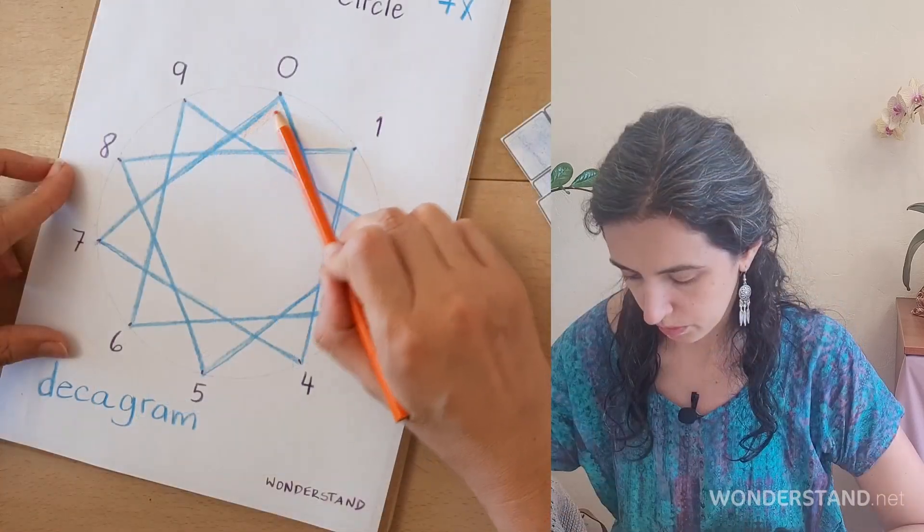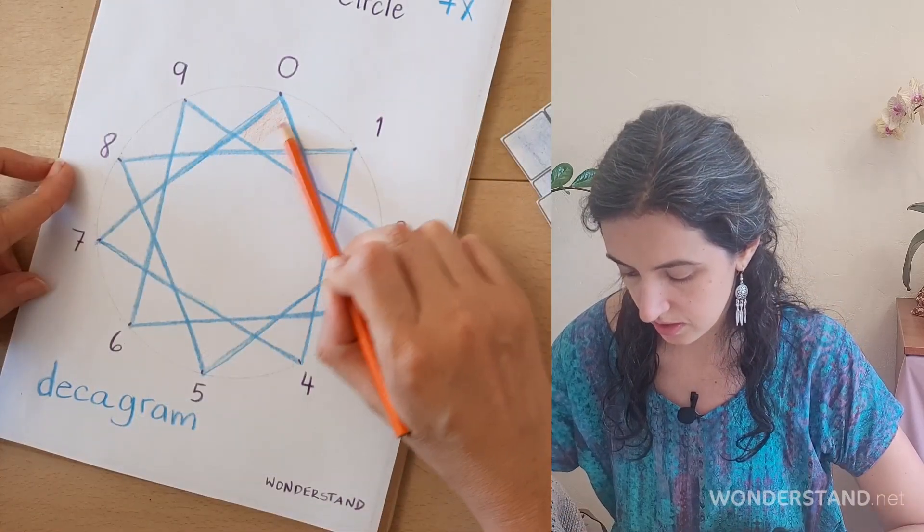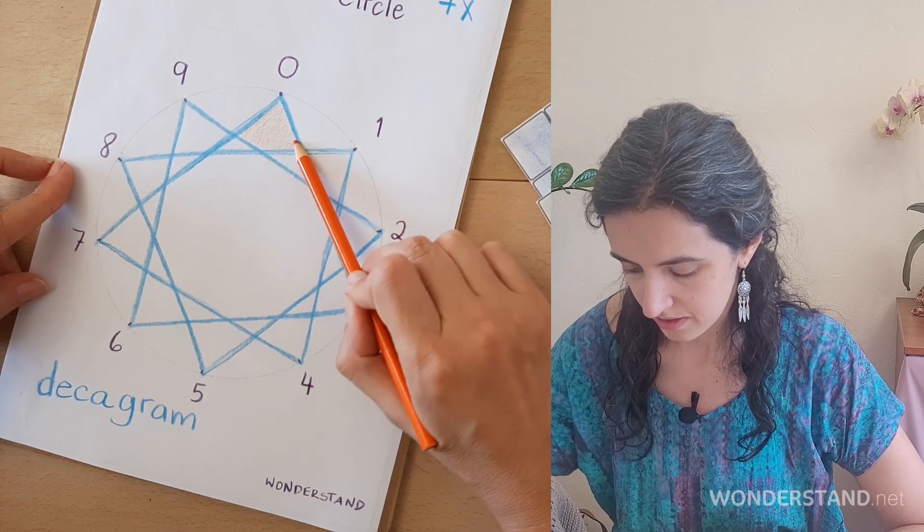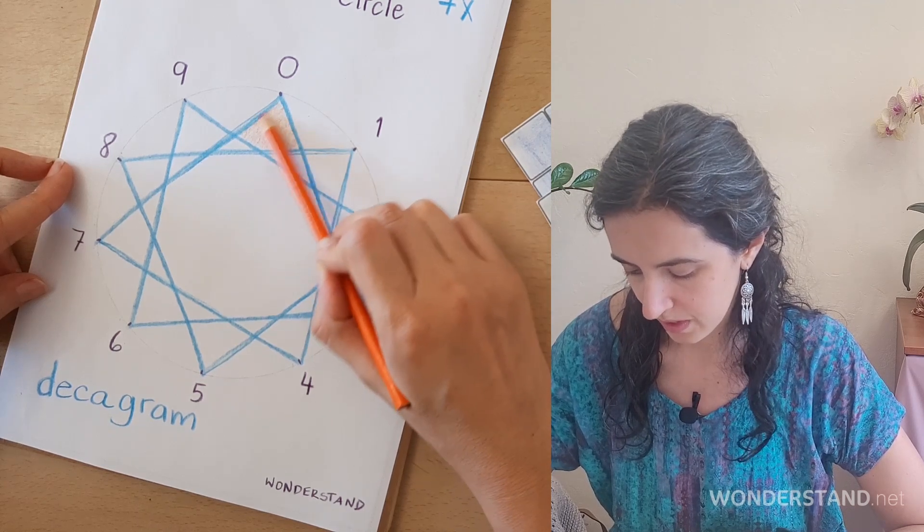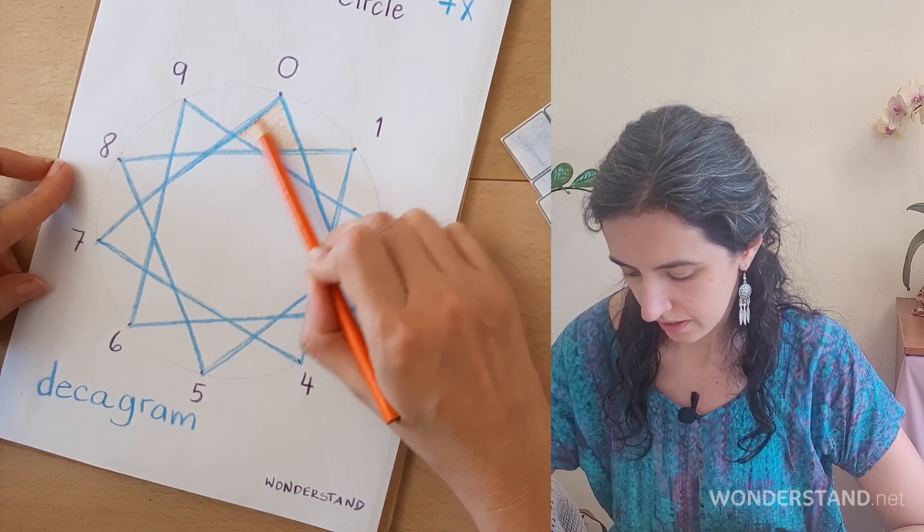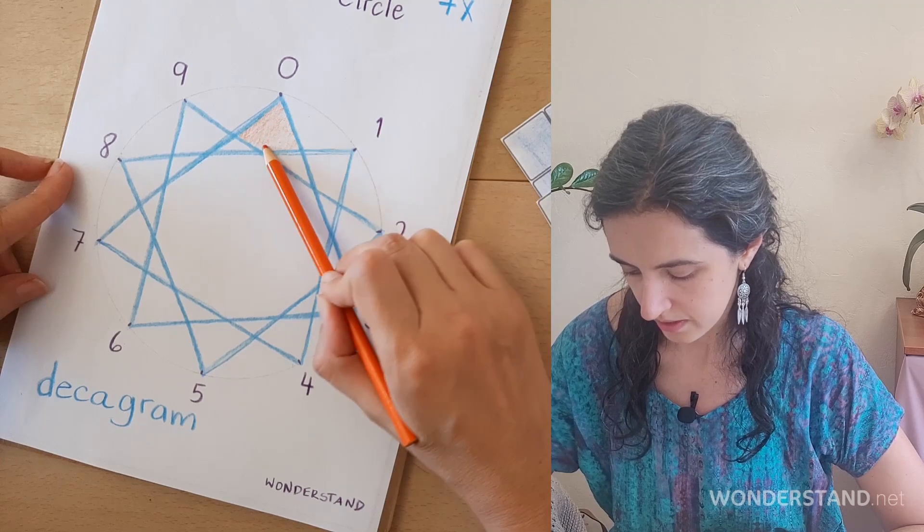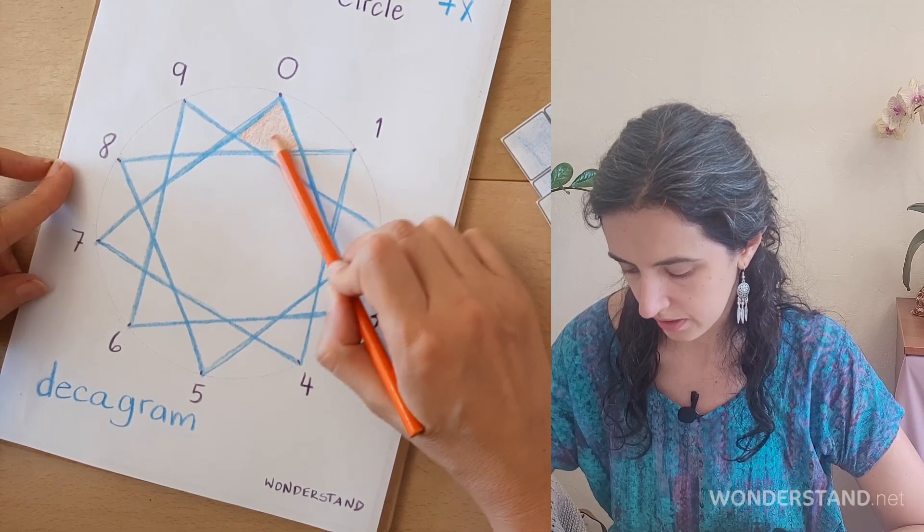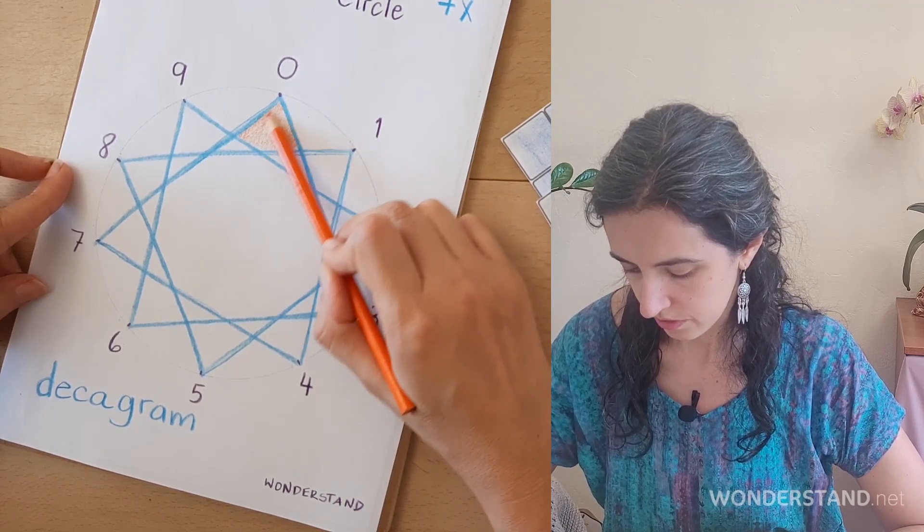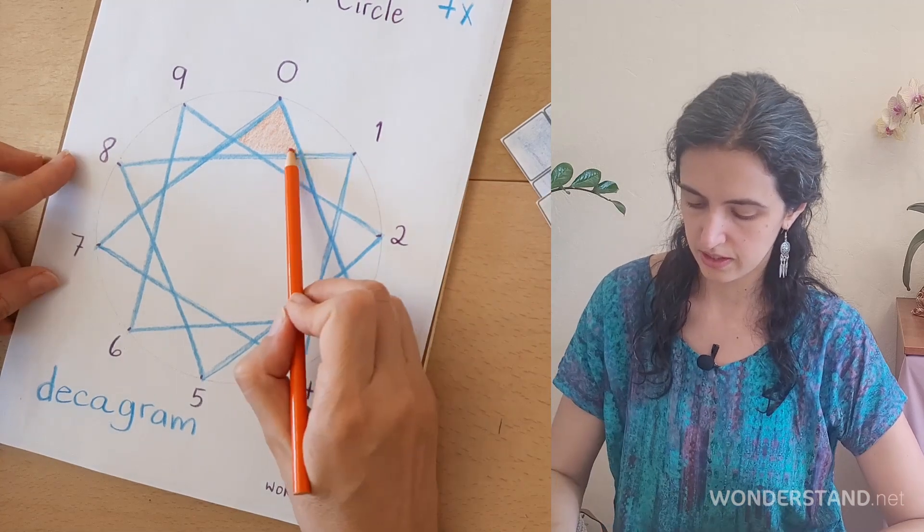Some students have told me, oh, Miss Karim, it looks like a sun. It's a special kind of star. And whatever you think it looks like, I invite you to add some color, some vibrant color, to the different parts that are inside this decagram.